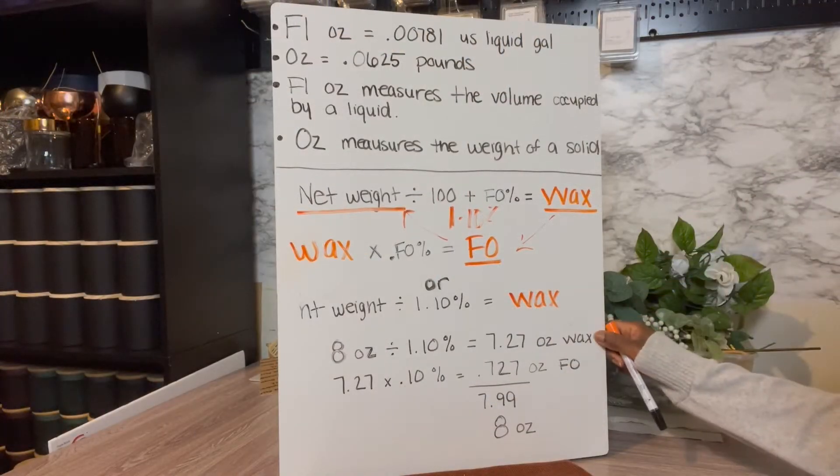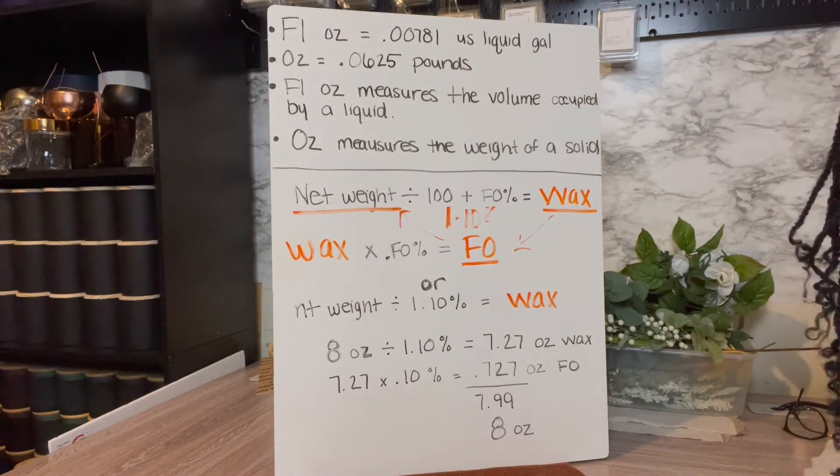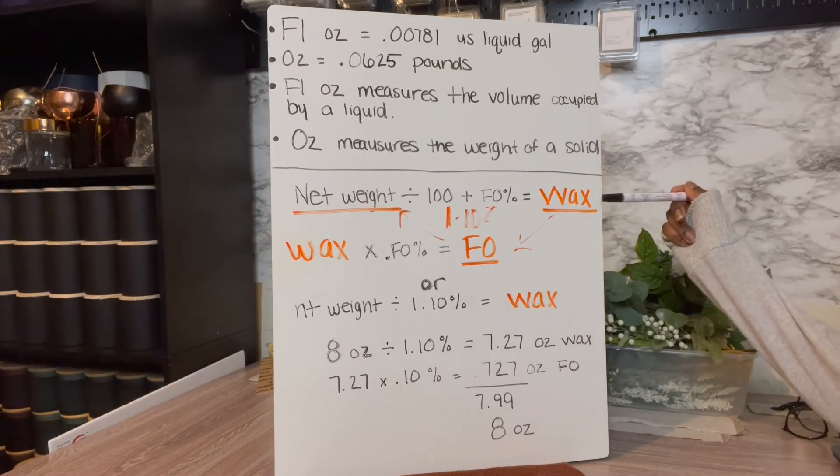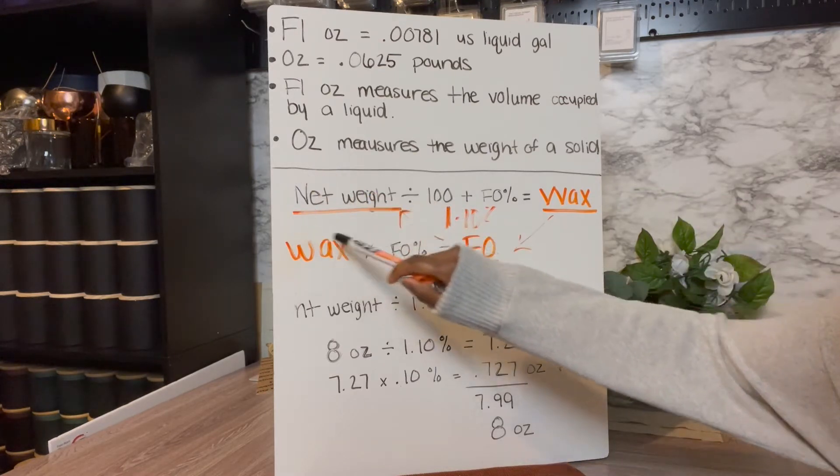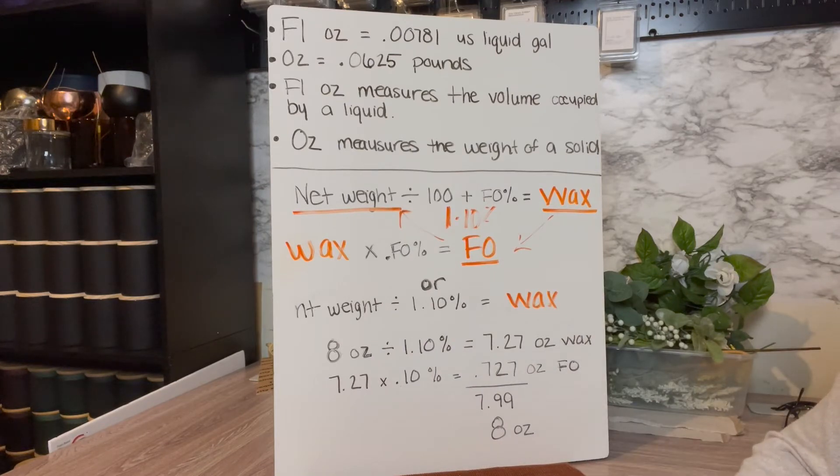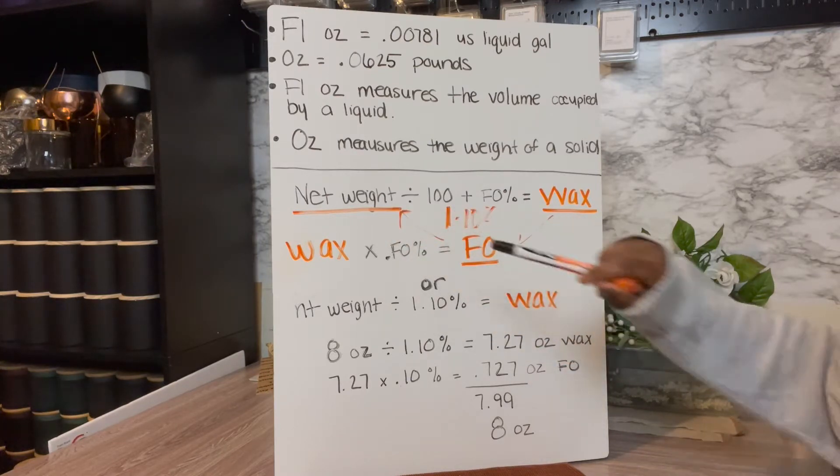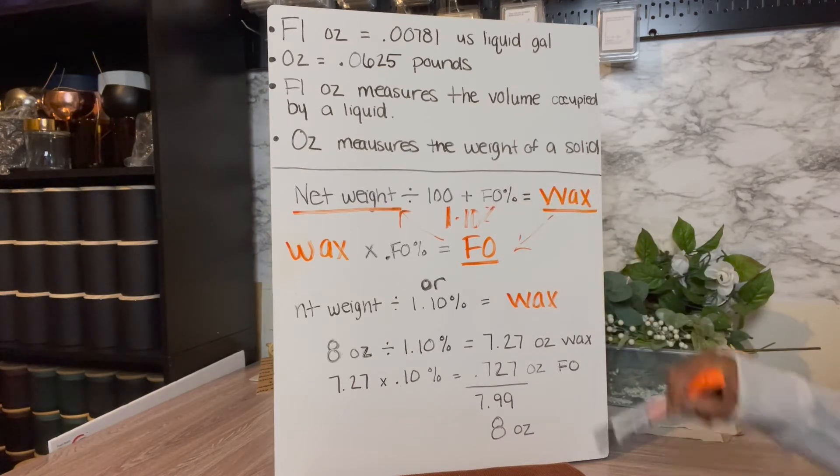Okay so I brought the camera in a little bit closer. So there are two things that you're going to need to know to plug into your formula here. Your formula being a two-step problem. The first step you're going to be figuring out your wax, your total net weight in wax. So you're going to need to know your net weight of your vessel. How much does your vessel hold comfortably? 8 ounces, 10 ounces, 11 ounces, 14, it doesn't matter. That's what you're going to be plugging into your net weight. We're going to use 8 ounces. So we're going to take our net weight divided by 100 plus your fragrance oil percent. This is the next thing that you need to know.